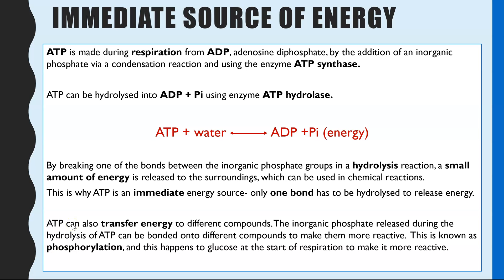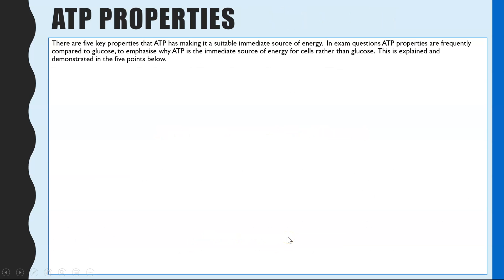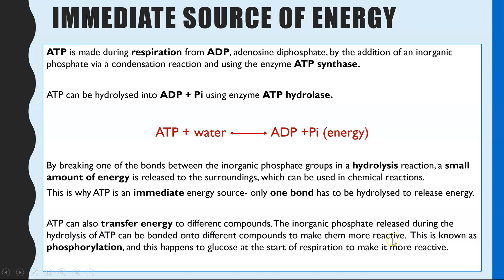ATP can transfer the energy released when that bond is hydrolysed. Instead of energy being released to the surroundings, the inorganic phosphate that has been broken off can be bonded onto a different compound, making that compound more reactive. This is known as phosphorylation. The reaction where ADP and Pi join together to make ATP is also phosphorylation, because ADP gains energy and a phosphate group to become ATP. Phosphorylation is also the first stage of respiration — glycolysis — in both aerobic and anaerobic respiration.